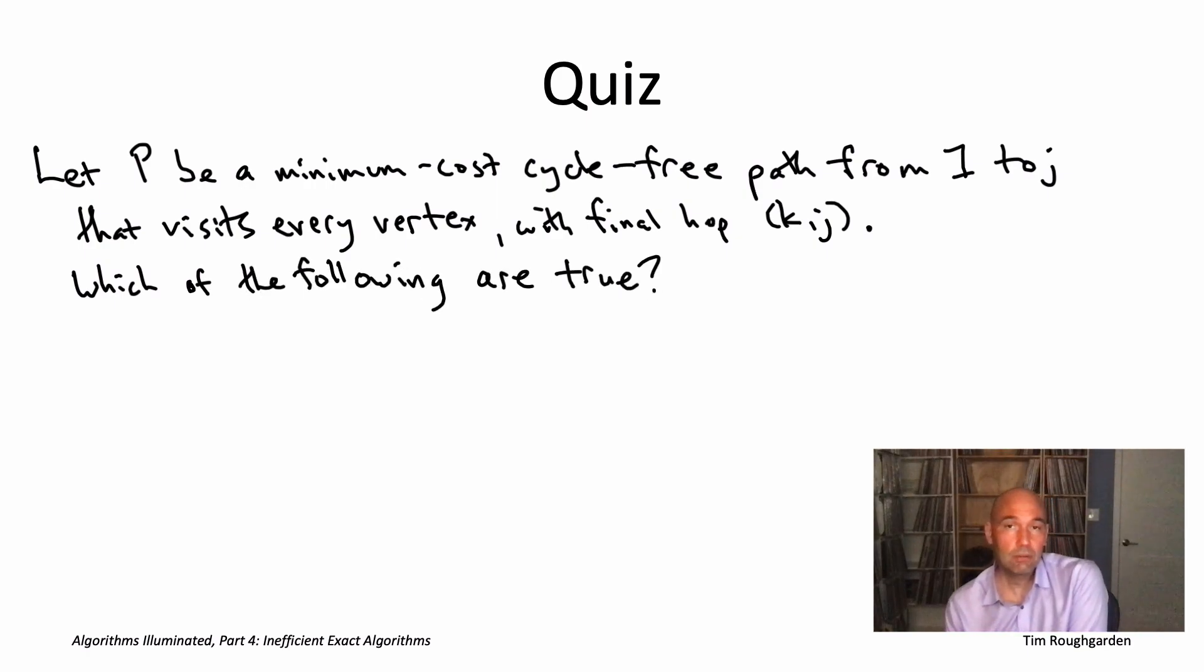We're going to ask the same type of question. Suppose we've now fixed j. And suppose someone handed you on a silver platter the minimum cost path from one to j of the type that we want. So cycle-free and visiting every vertex. Again, we want to think about the last decision made by this optimal solution. That's going to be the final hop, which ends at the vertex j. There's some penultimate vertex call it k. So the path ends with the edge k comma j. Now we want to think about plucking off that last edge, seeing the subpath that we have left. We want to ask the question for what subproblem is that subpath an optimal solution?